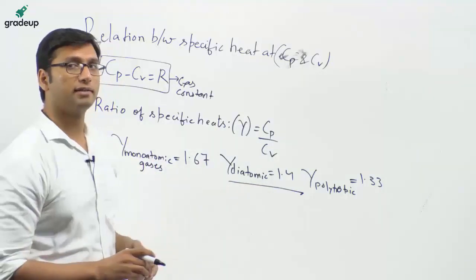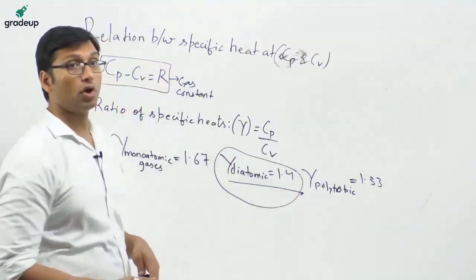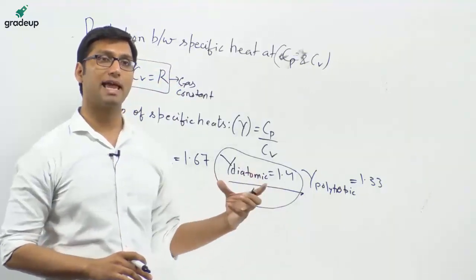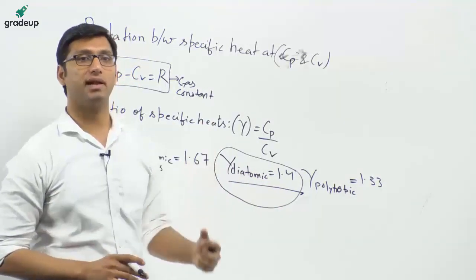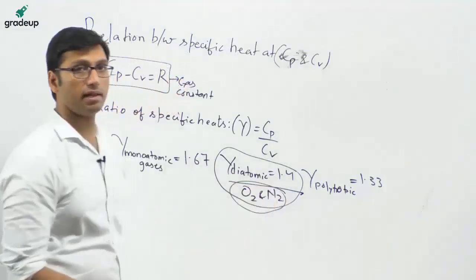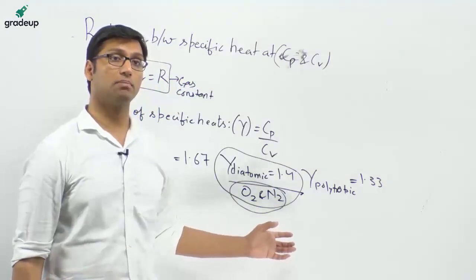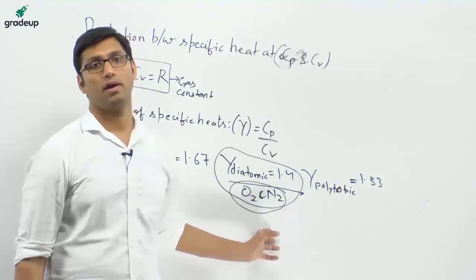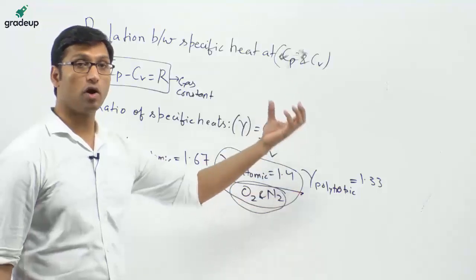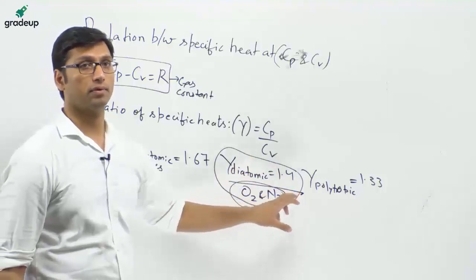For your reference, most gases consist of oxygen and nitrogen, and both exist in diatomic state as an ideal gas. So if the value of gamma is not given in the exam and you have to find it, you can take it as 1.4.